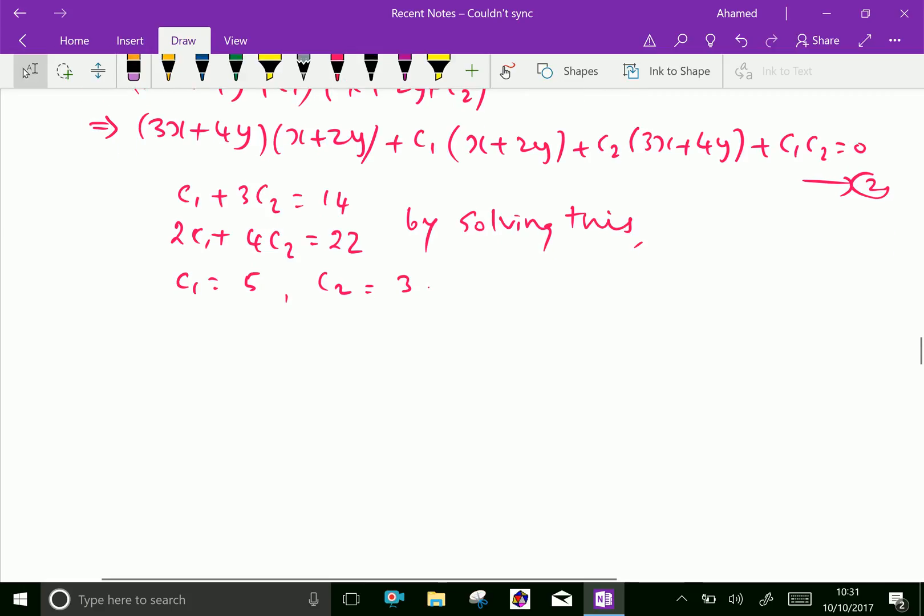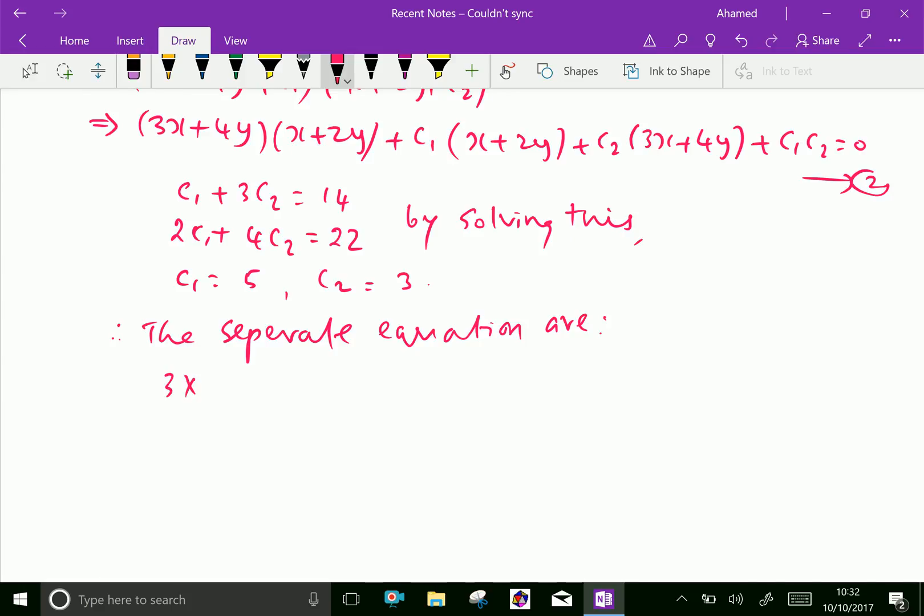The separate equations are now 3x plus 4y plus 5 equals 0 and x plus 2y plus 3 equals 0. We got two separate equations.